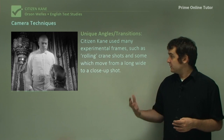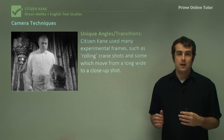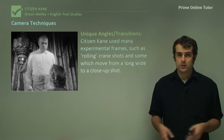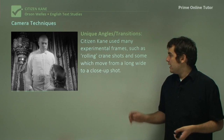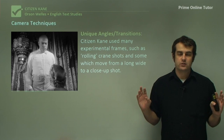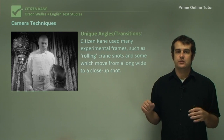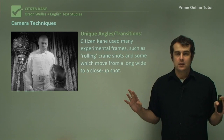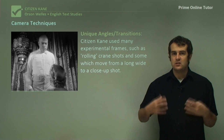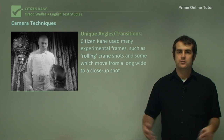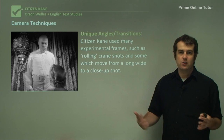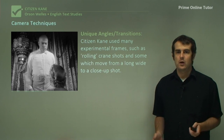One scene I'm thinking of is where Kane is giving his candidacy speech. It starts from a wide shot to show how many people are fanatically following him, then moves to a close shot where we see the man exerting his power and wit. That camera movement really helps to show this transition quite well.